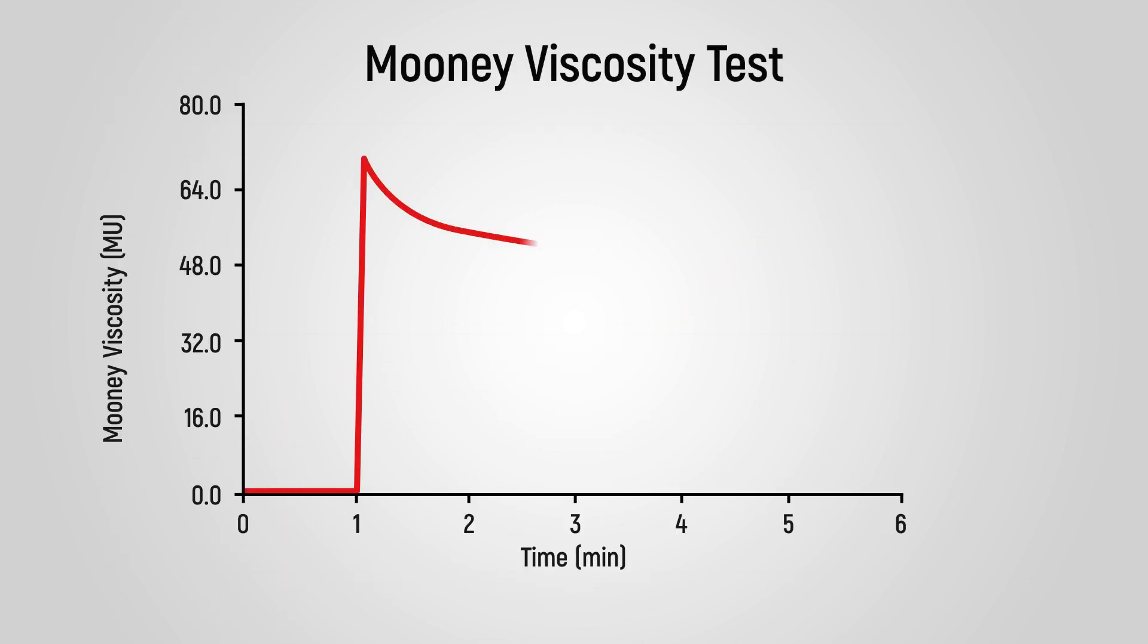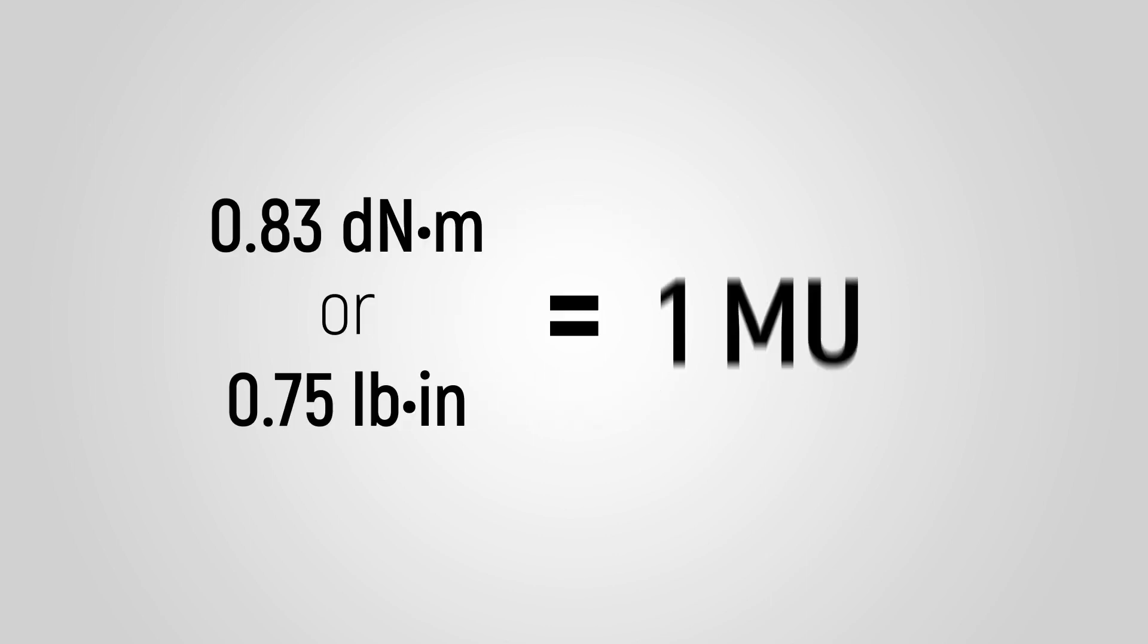If we look at the graph from a Mooney test, we can clearly see the steps of the test and how the compound being tested responds. The line on the graph represents the material's torque response. A torque of 0.83 decinewton meters or 0.75 pound inches is equivalent to one Mooney unit.